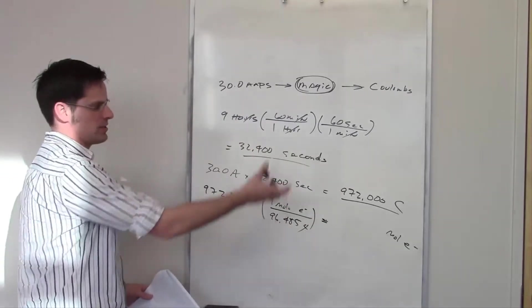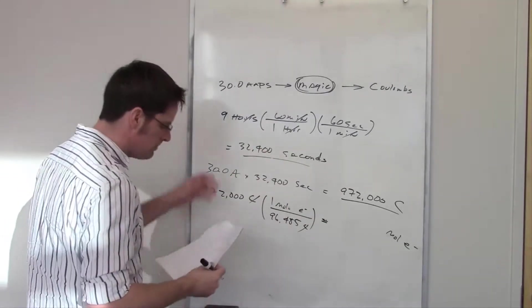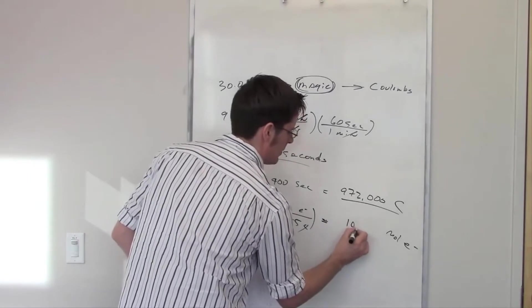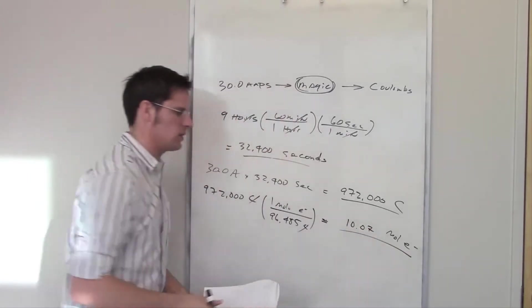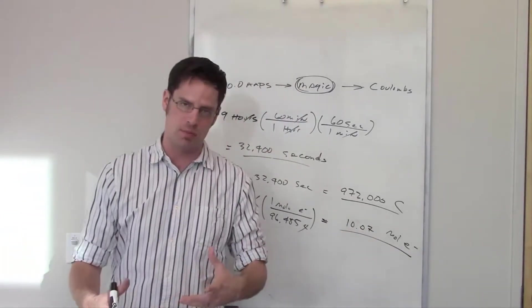—is equal to 96,485 coulombs. Coulombs cancel each other out. I throw that into my calculator. That will tell me how many moles of electrons I'm actually getting in this number of coulombs, and that comes out to be 10.07 moles of electrons.